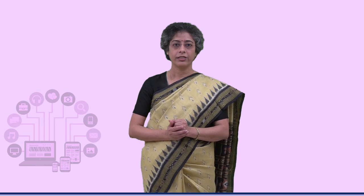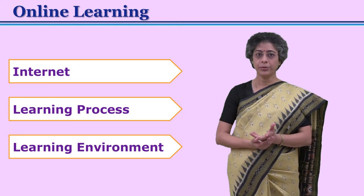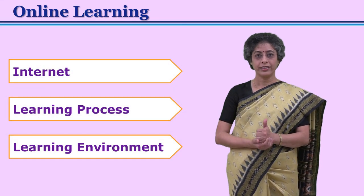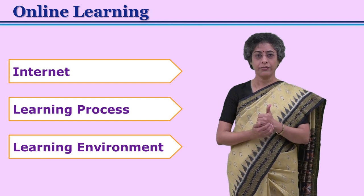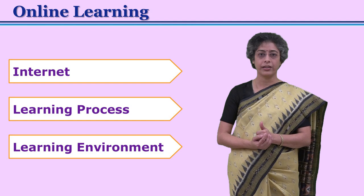In online learning, learners interact and communicate via technology-based material, via technology mode. It may involve teaching, research, and assessment. There are three aspects of online learning: internet, learning process, and learning environment. Web-based communication is essential, which is why internet is an essential part. We can also create an online learning environment through intranet.